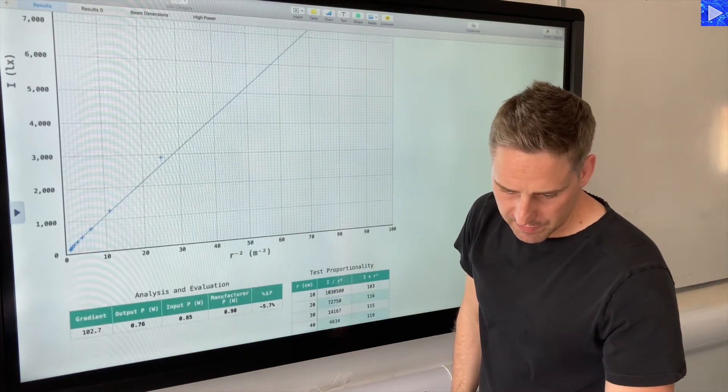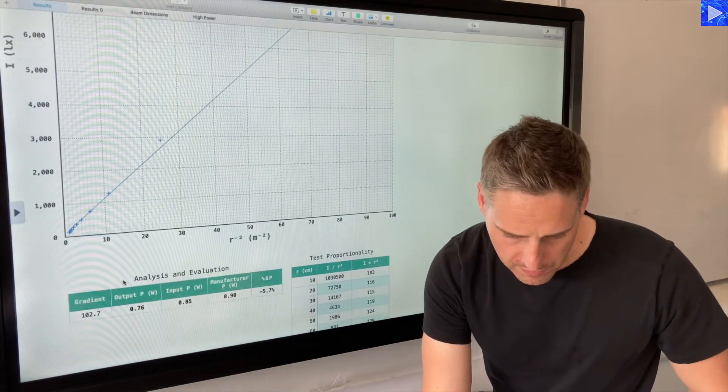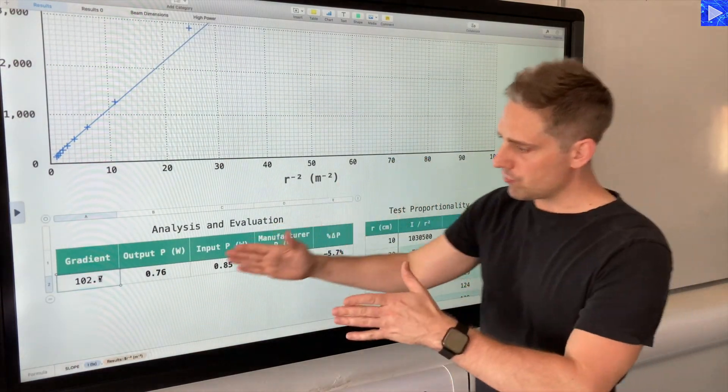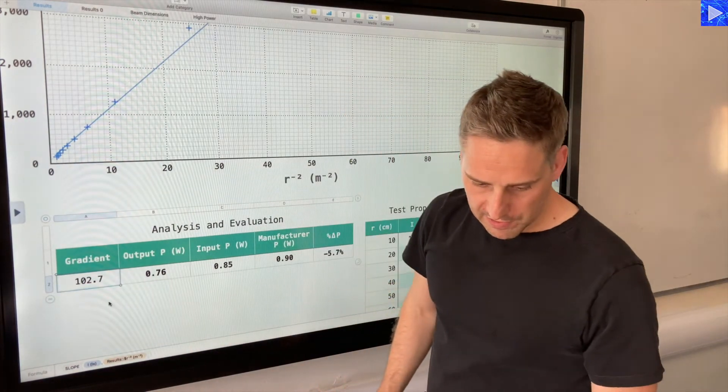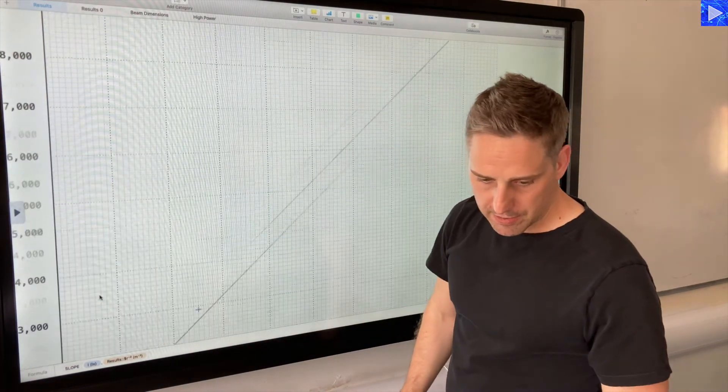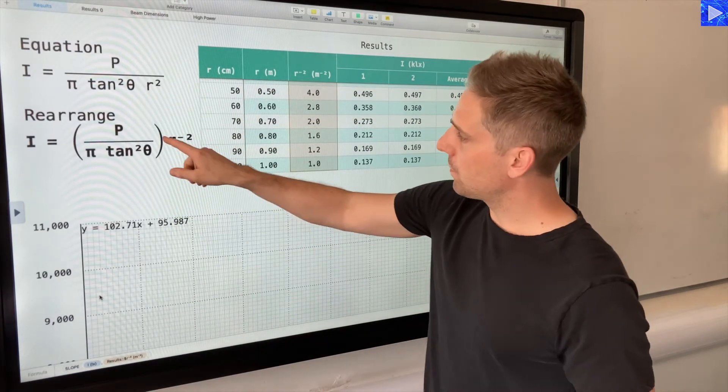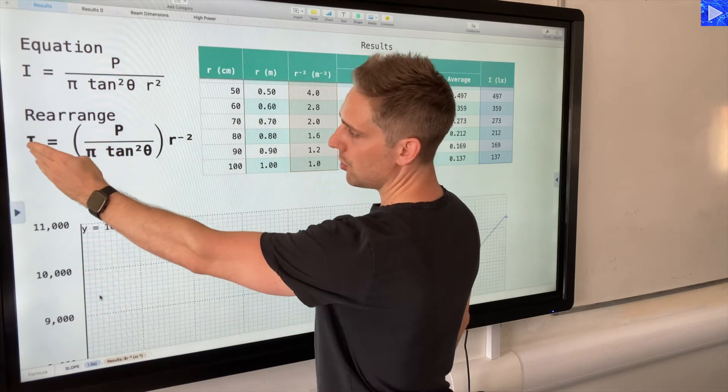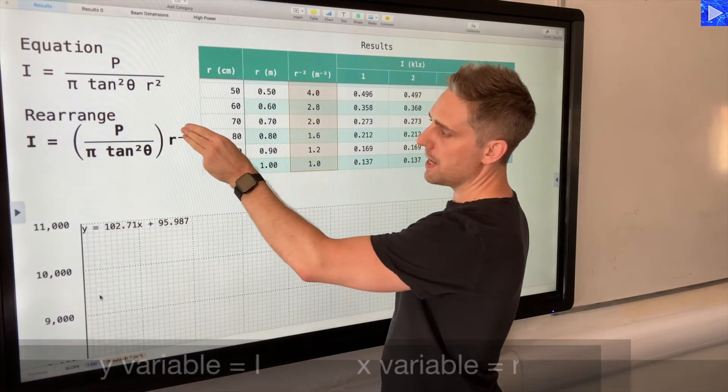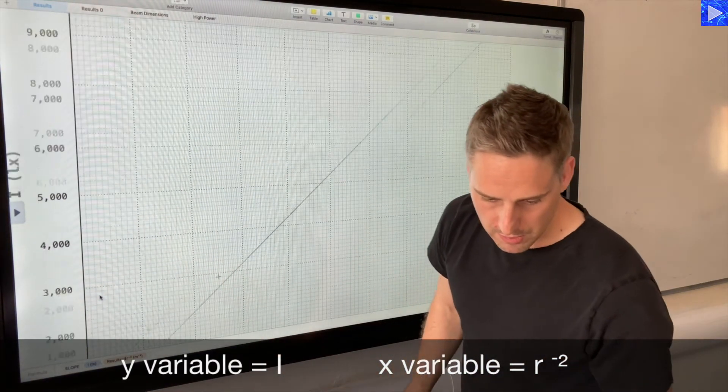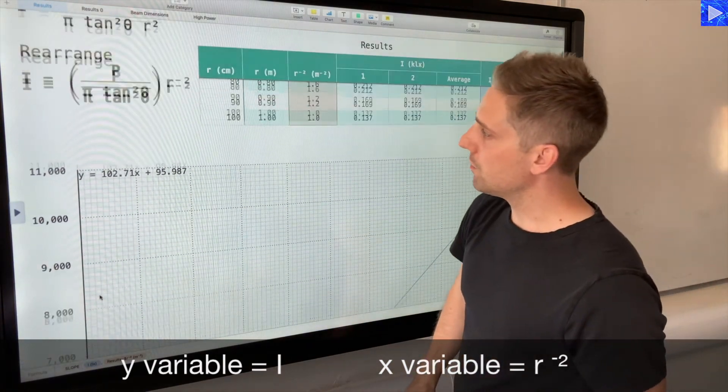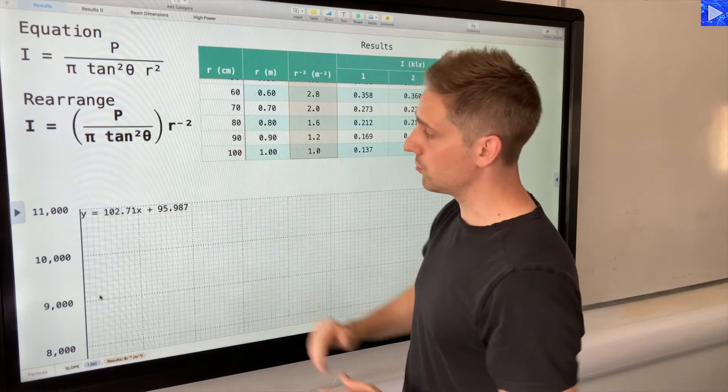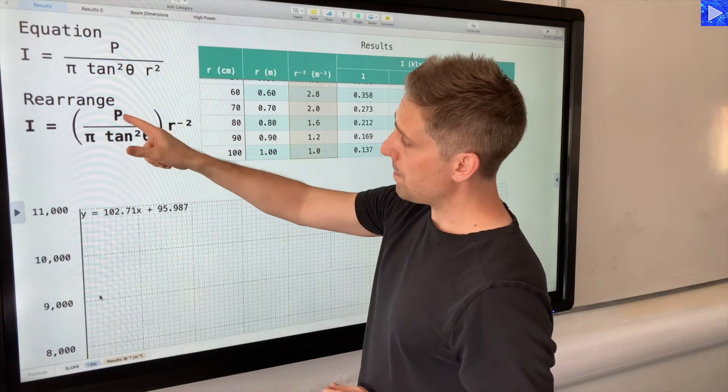Like I said, a bit of divergence, but let's assume that it was okay. So this is where we need to take the gradient. It's 102.7 here. And then to calculate the output power, what we do is we equate the gradients of this part of the equation. So if we compare this to y equals mx plus c, on the y-axis we've got I, on the x-axis I've plotted r to the minus two, one over r squared. So this portion of the equation is equal to the gradient. We want to determine P, so P is going to be equal to gradient multiplied by pi tan squared theta.